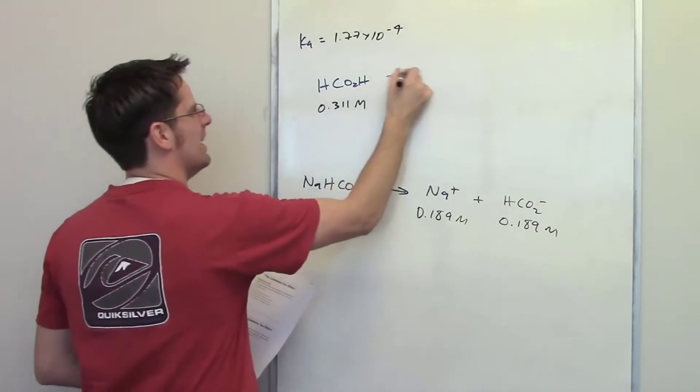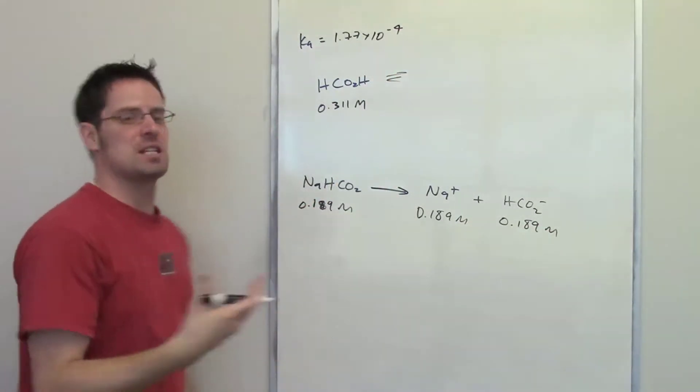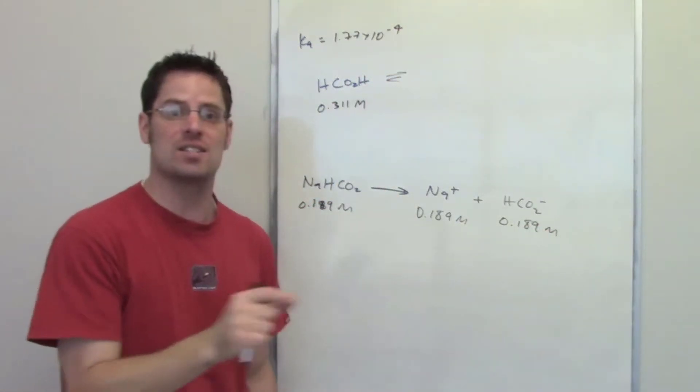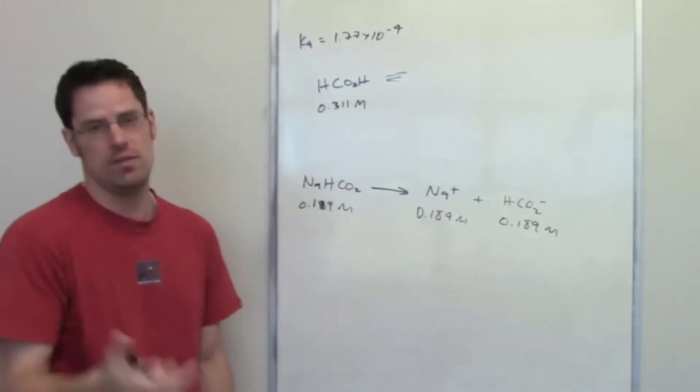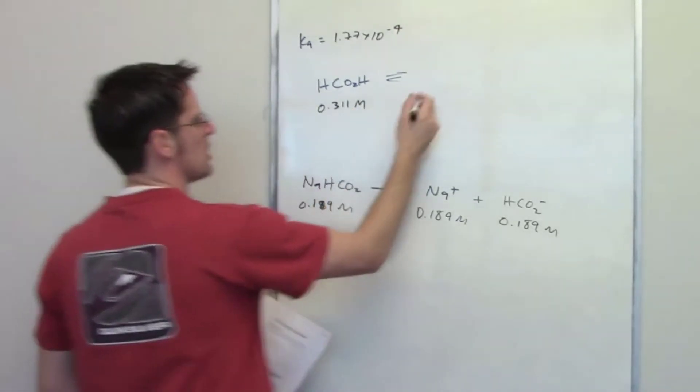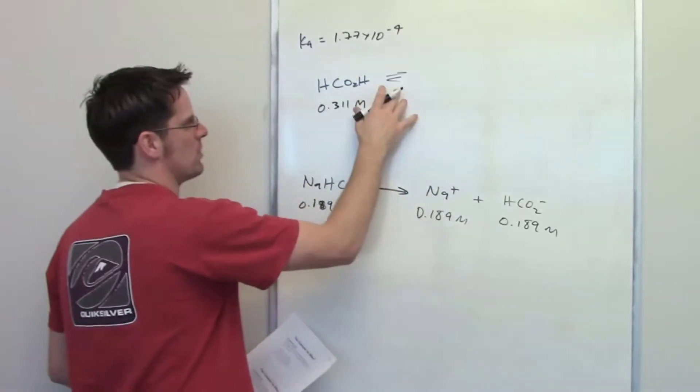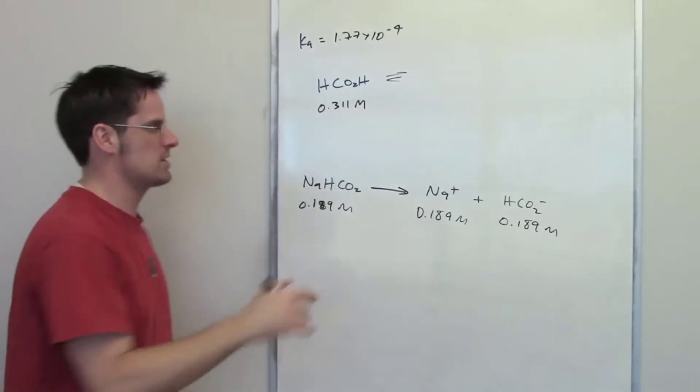Now we look up here. Formic acid, which happens to be the acid that red ants inject you with when they bite you, if you've ever experienced that, it's kind of fun, is going to dissociate in an equilibrium way. And the reason is because it's not a strong acid.